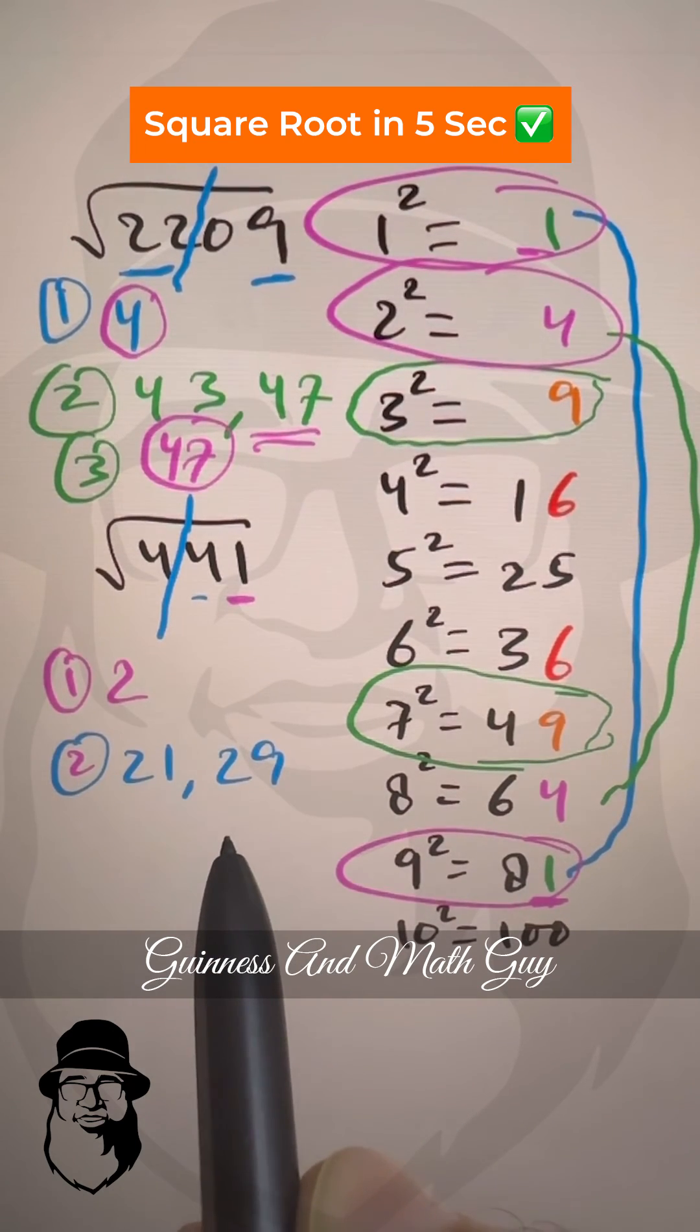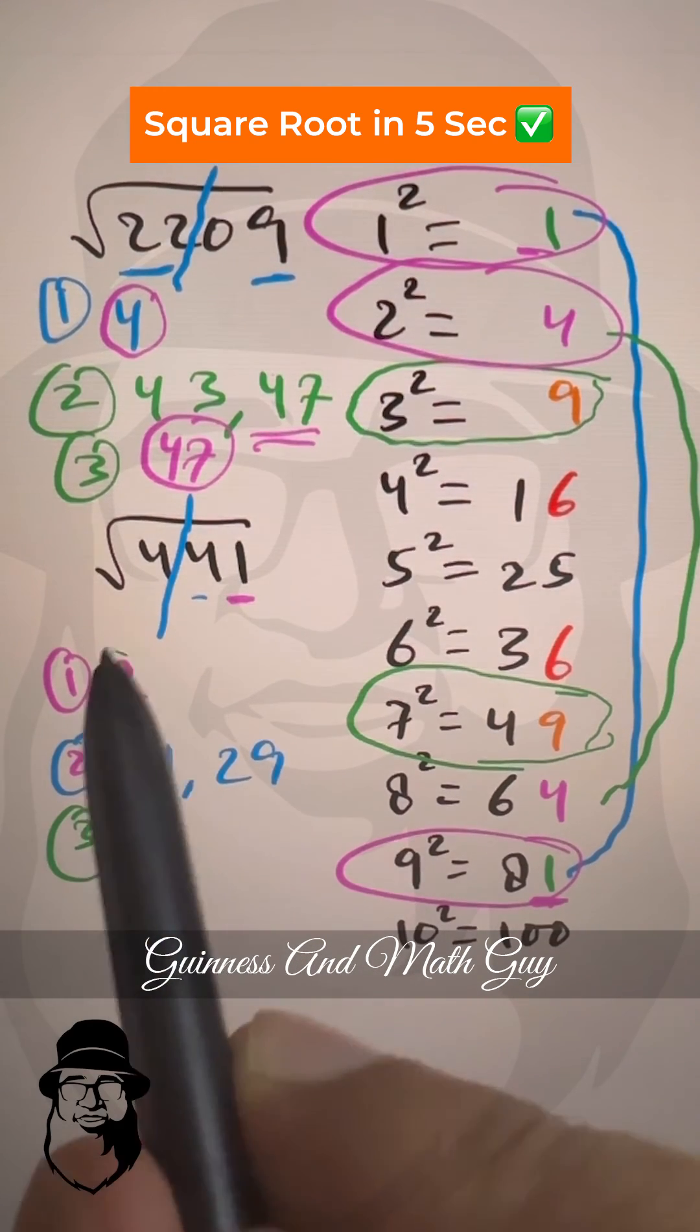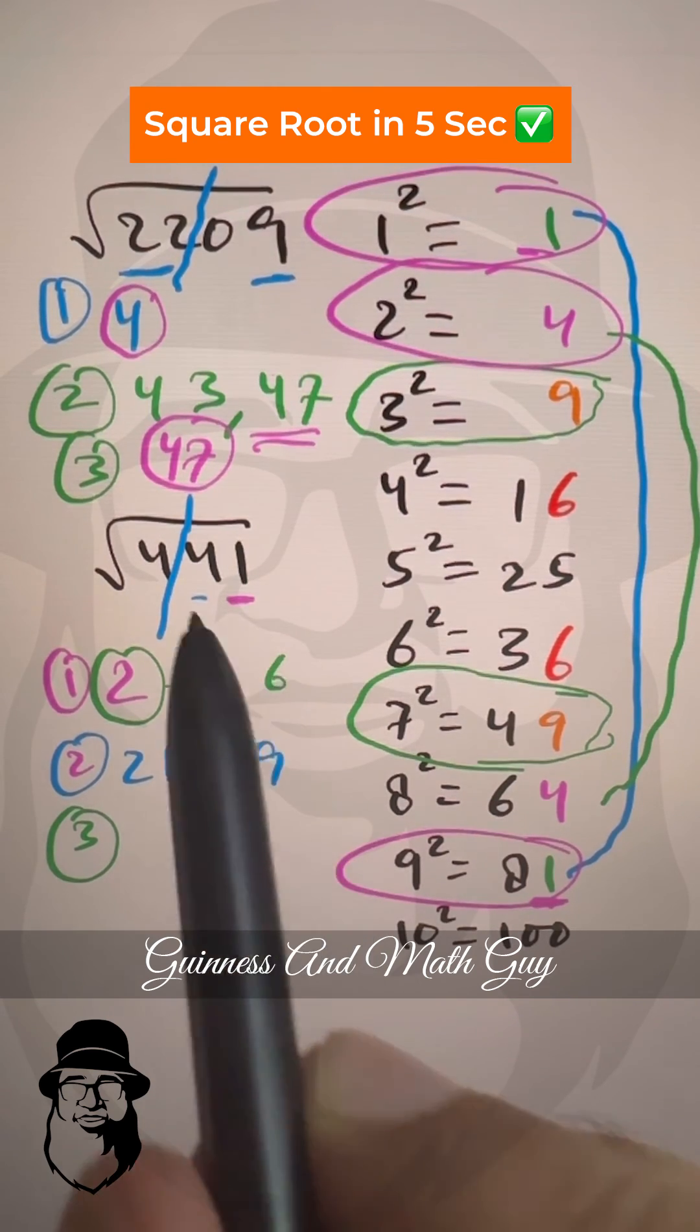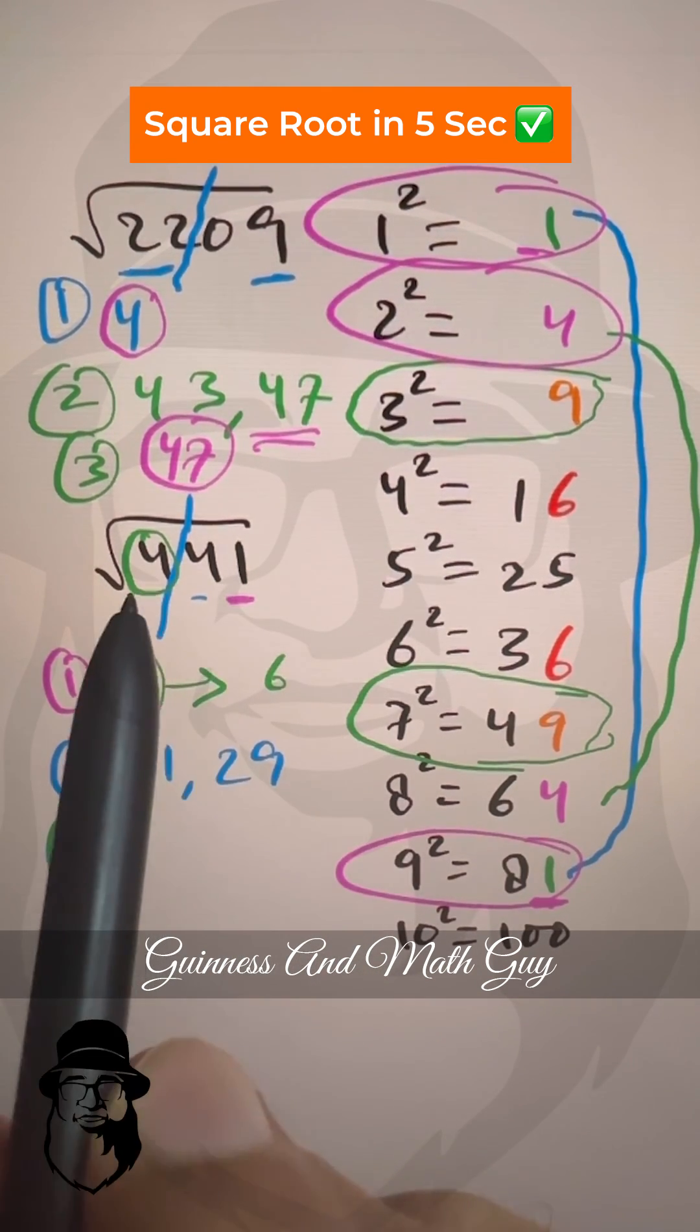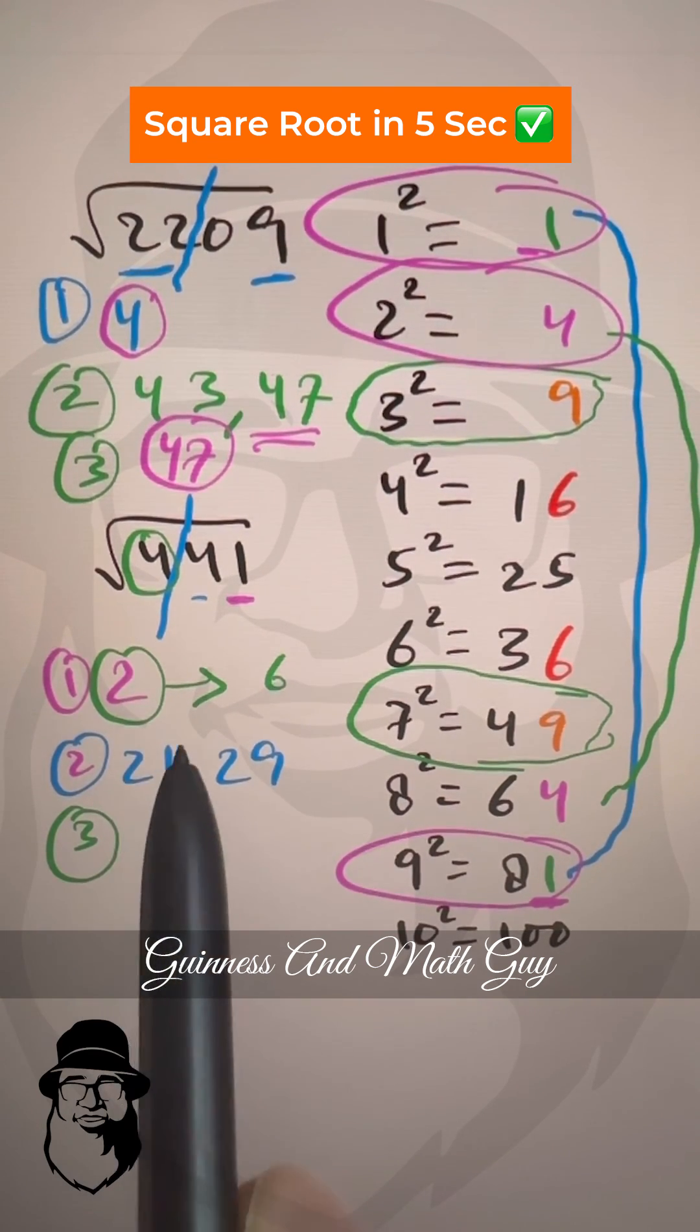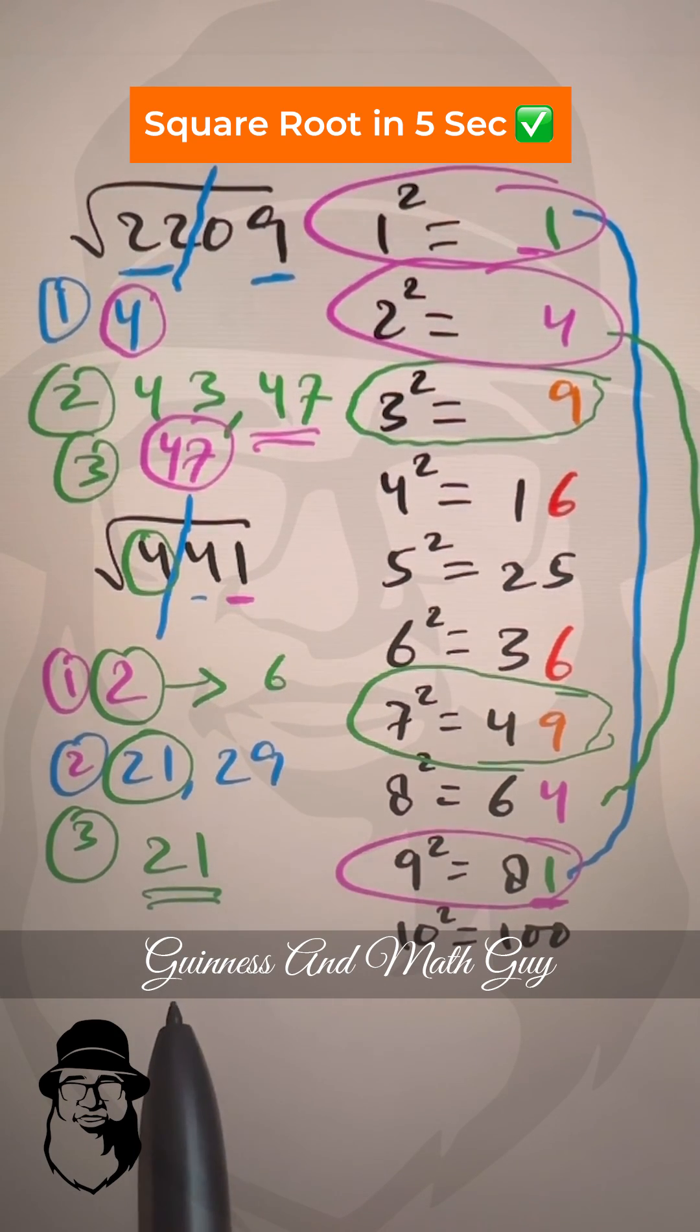The final step here is we multiply this 2 by next number 3. 2 times 3 is 6. We can see this 4. Always see if this number is greater or less. This 4 is less than 6. It means we take the smaller one here. 21 is our answer.